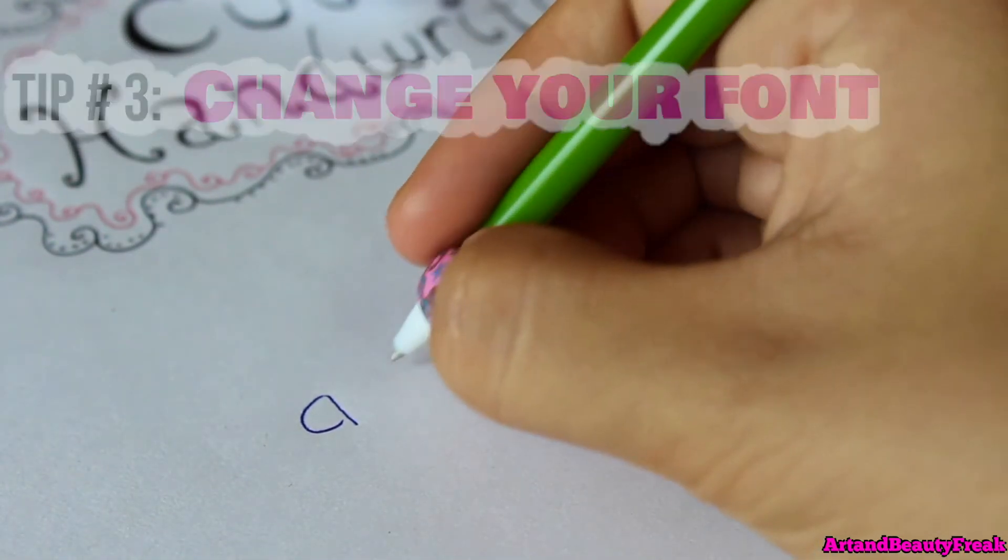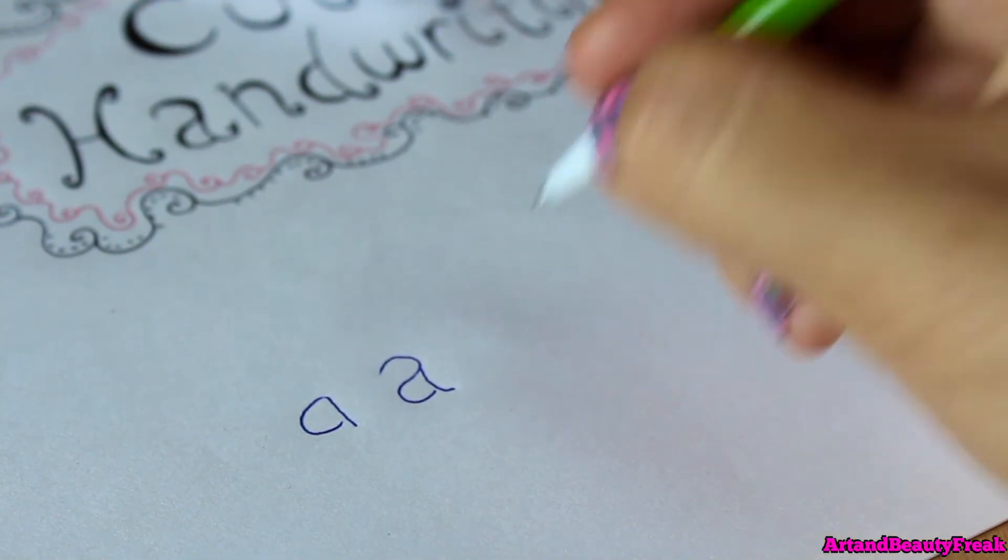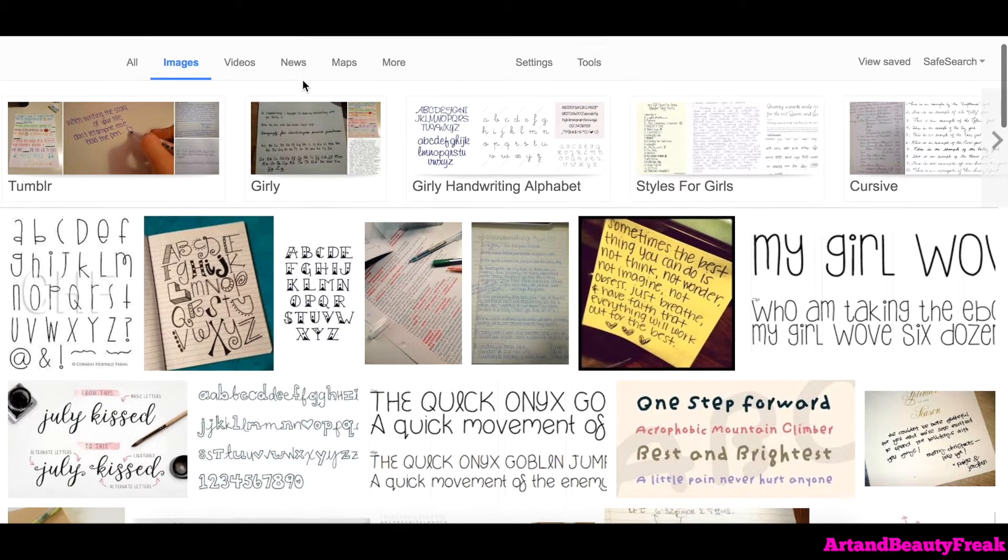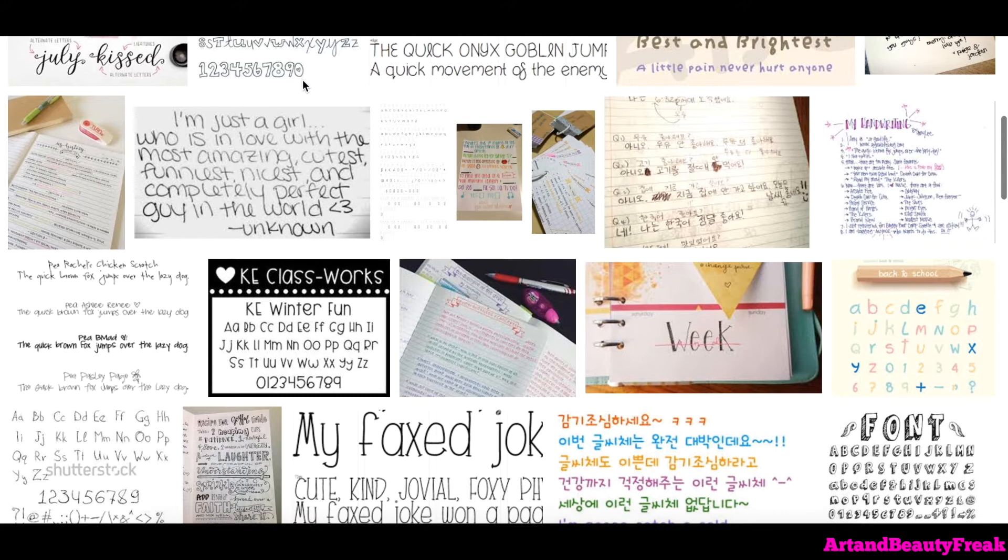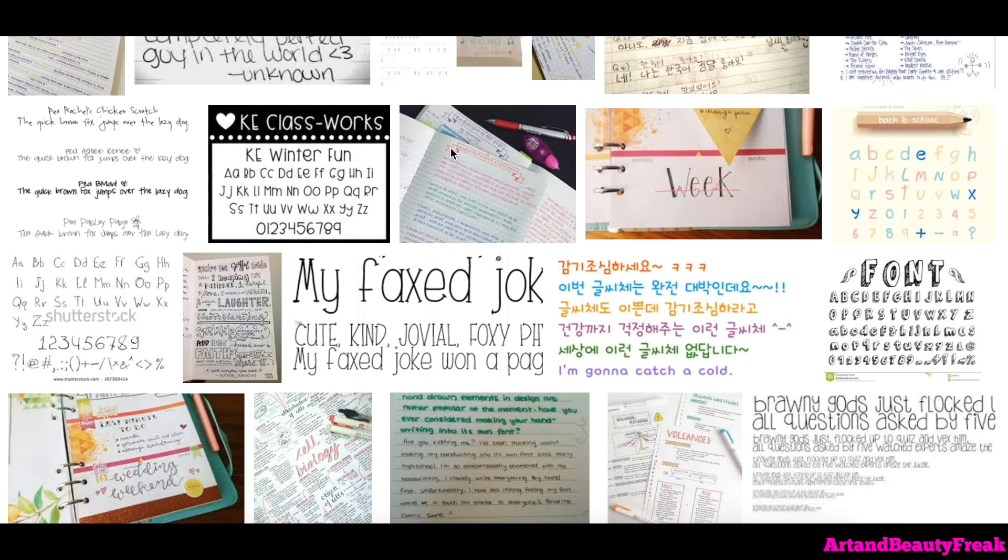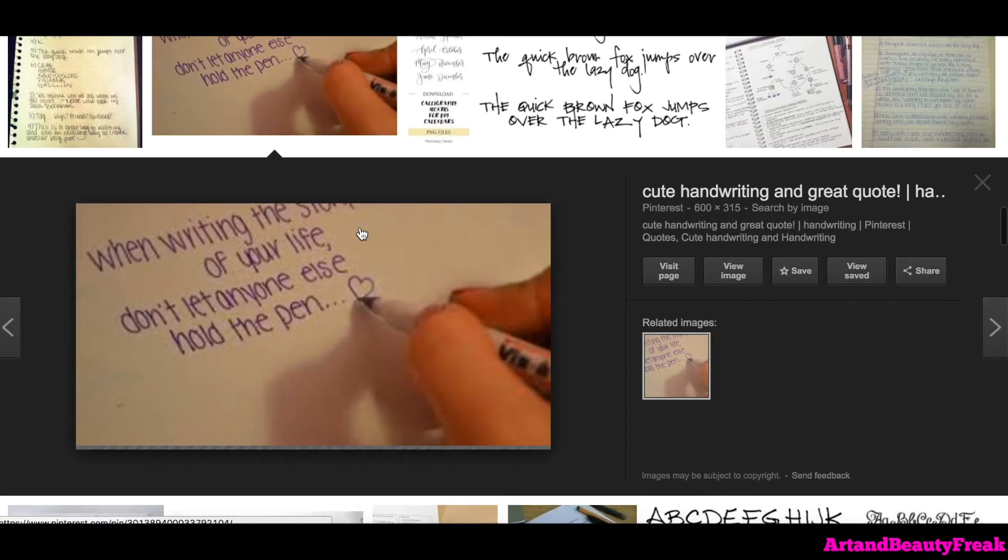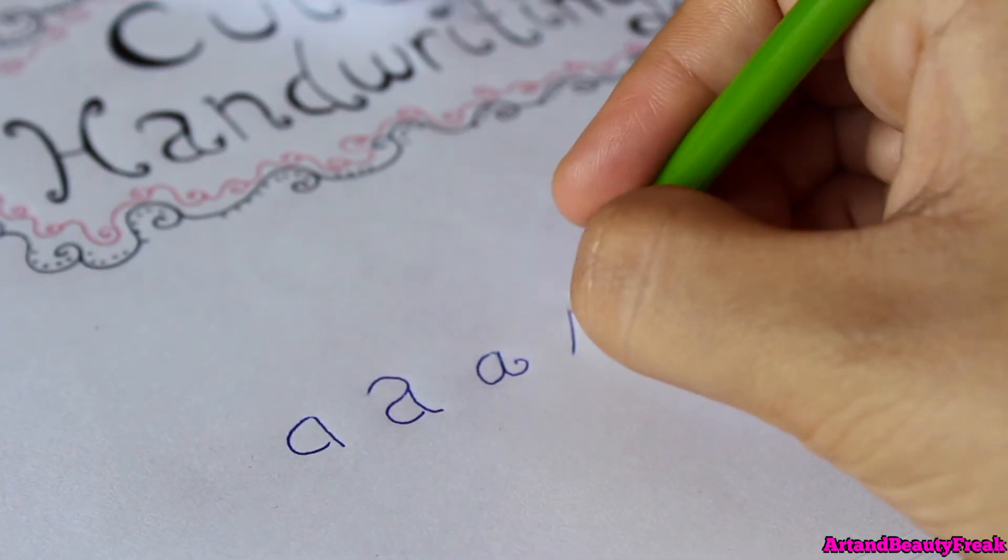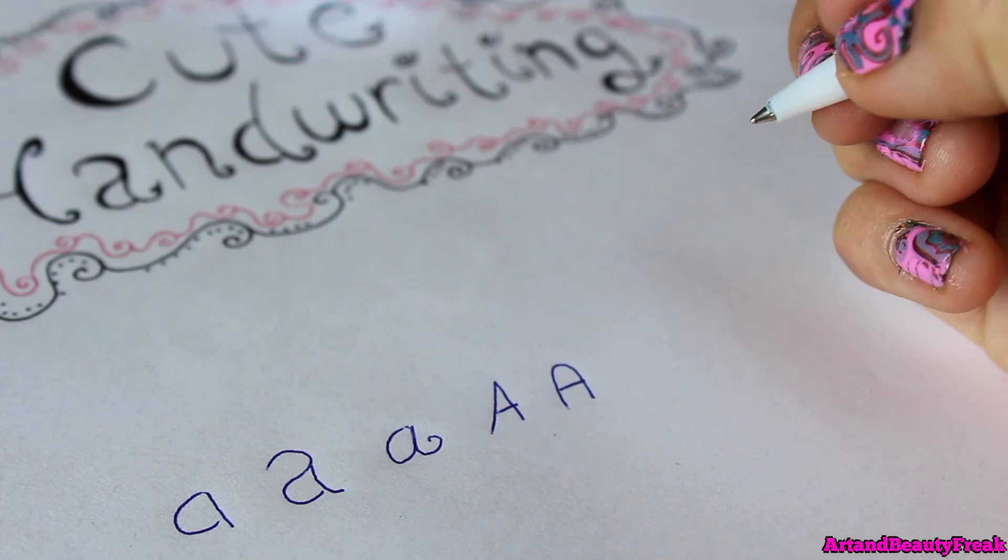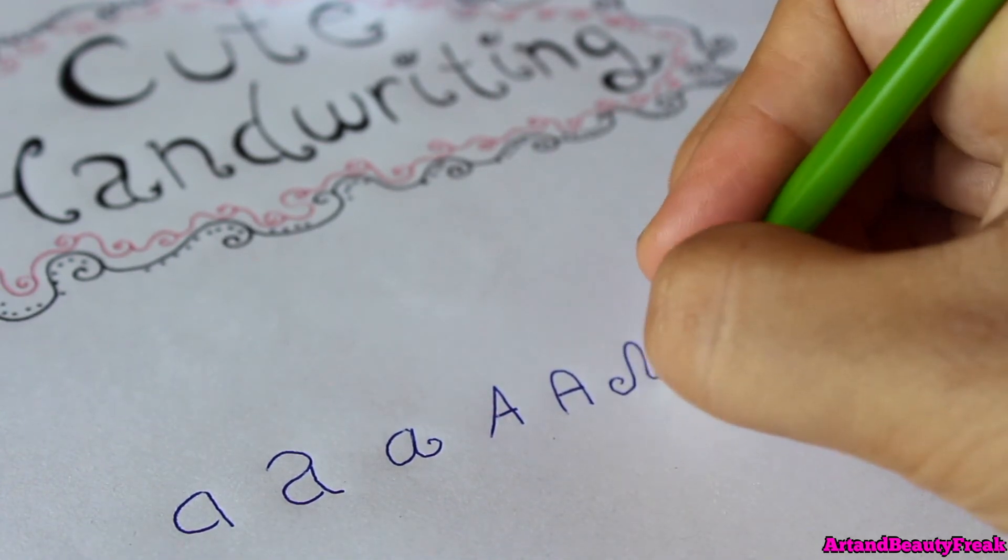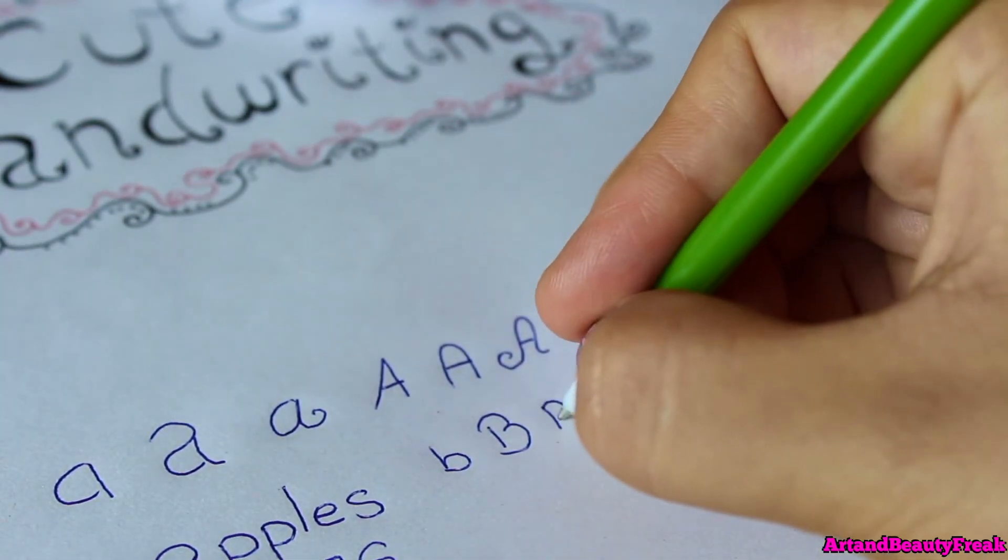Tip number three is to change your style or font. If you want to change the font you're using when you're writing, that is really easy. Just look online, go on Google and search cute handwriting, then just try to copy what you're seeing. If you find anything that you really enjoy, try to copy that, and then after time when you're using that type of handwriting every day, you will eventually find your own style because you will most likely change it up little by little. What I do when I don't like the way I write certain letters is I usually just change it up letter by letter.